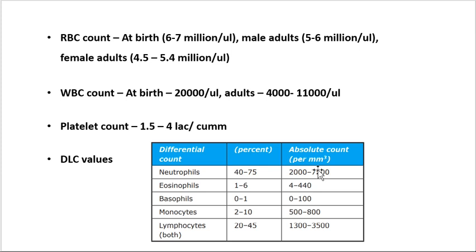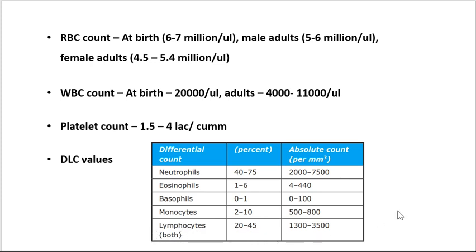Differential leukocyte count normal values are given in percentage, and you can calculate the absolute count from the TLC value given. Neutrophils are 40 to 75 percent (or around 60 percent), eosinophils 1 to 6 percent, basophils 0 to 1 percent, monocytes 2 to 10 percent, and lymphocytes — both small and large — 20 to 45 percent.